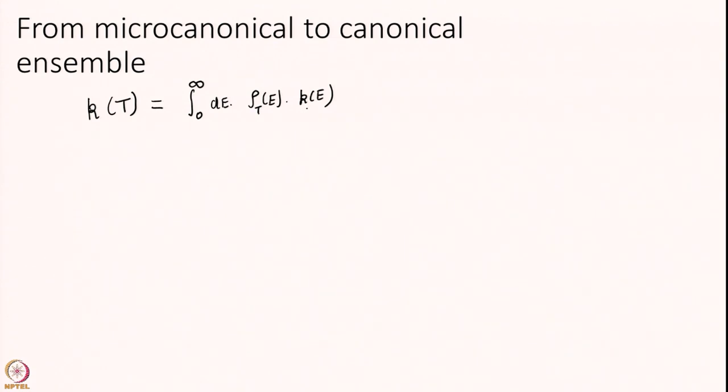K of E we will use the Transition State Expression, E minus E_A. What is rho? That is the question.